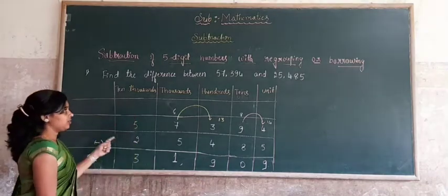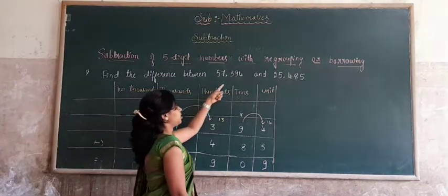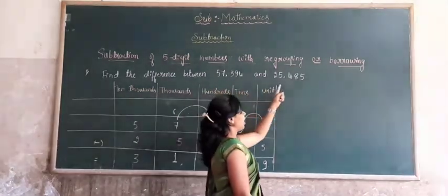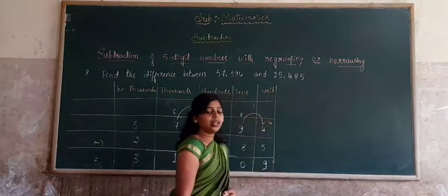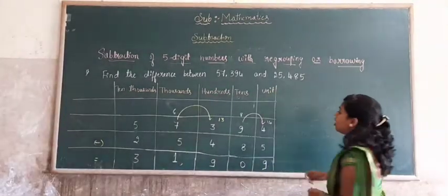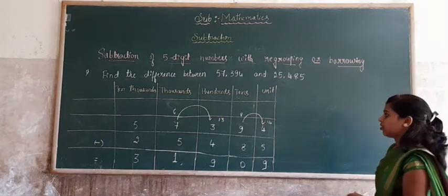We get 31,909. When we subtract 57,394 minus 25,485, the difference is 31,909.